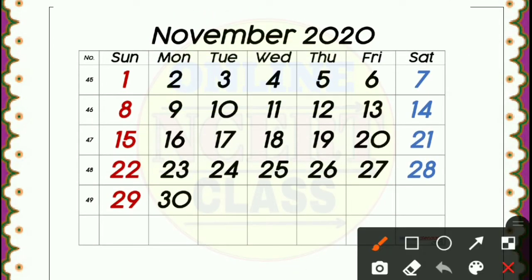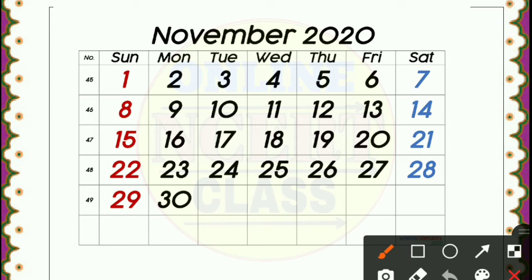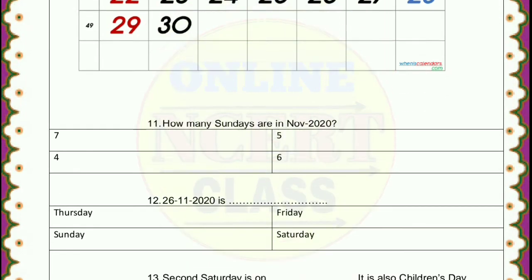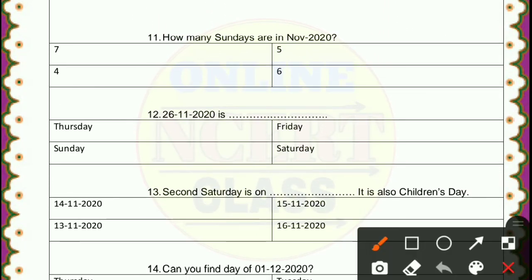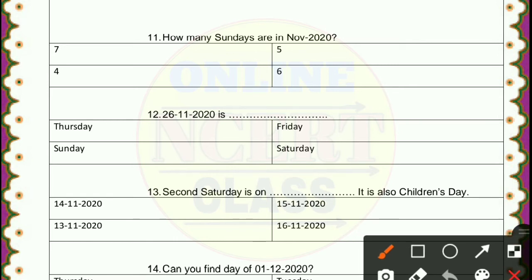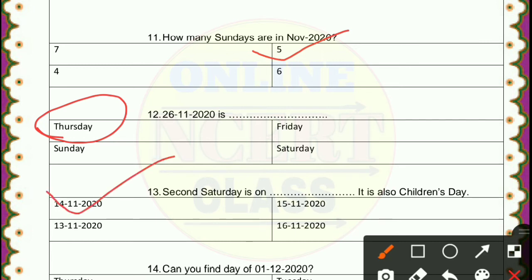Students, here is a calendar page for the month of November 2020. Please make it in your copy also so you can give the answers carefully. Sundays fall on 8, 15, 22, and 29. Saturdays fall on 7, 14, 21, and 28, shown in a different color. How many Sundays are in November 2020? The answer is 5. What day is 26th November 2020? It is Thursday. The second Saturday is on the 14th — that is also Children's Day on 14th November. You know that carefully.